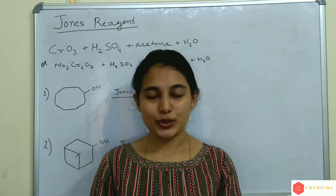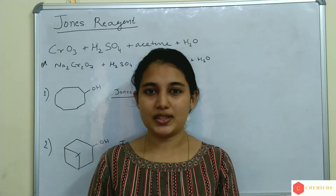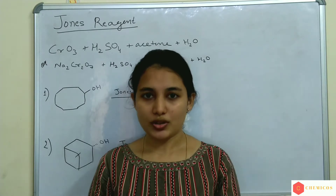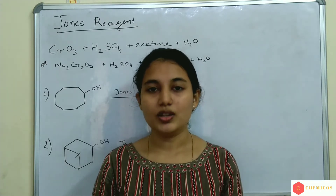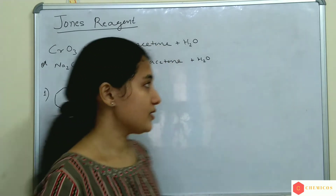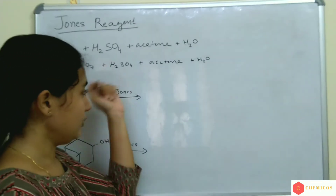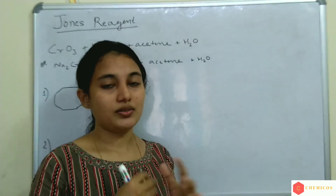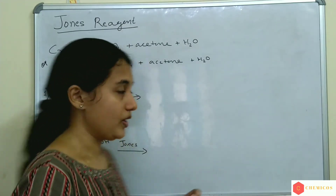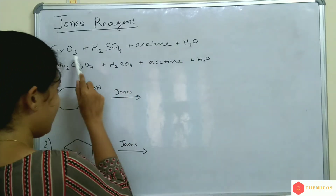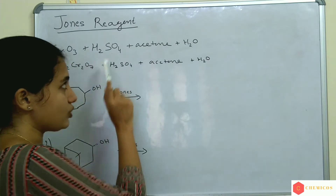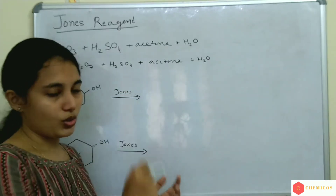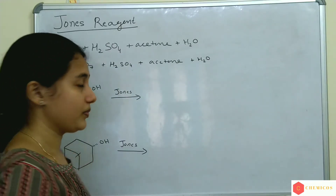Hello everyone. Today we are going to discuss about Jones' Reagent. Jones' Reagent consists of chromium trioxide (CrO3), sulfuric acid (H2SO4), and this mixture is mixed with acetone. So, CrO3 plus H2SO4 plus acetone is Jones' Reagent.